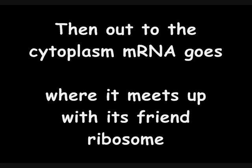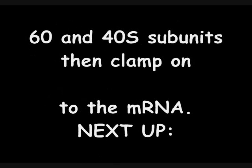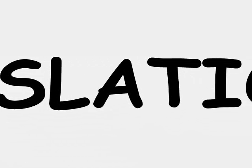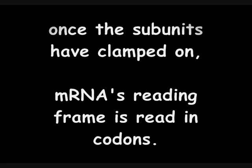Then out to the cytoplasm mRNA goes, where it meets up with its friend ribosomes. The 60S and 40S subunits then clamp on to the mRNA. In the ribosome, there are two special sites: A is for acceptor, P is for peptide.